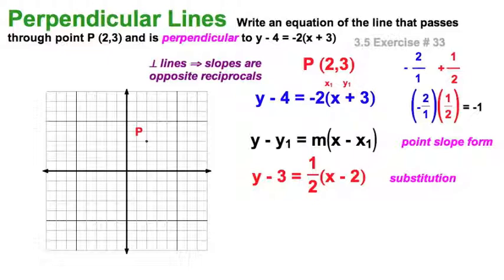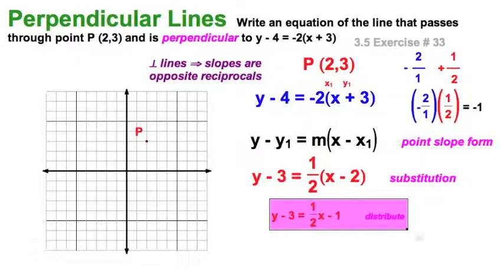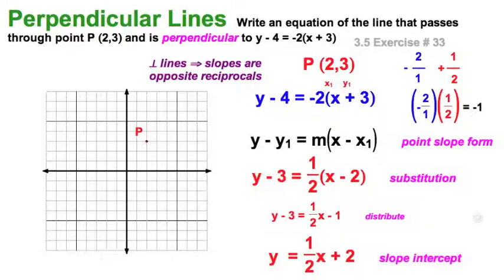This one would actually work with integral values. As you can see, if I distribute the 1 half times the x and the negative 2, and then add the 3 to both sides, I'll come up with the slope-intercept form of the same line.